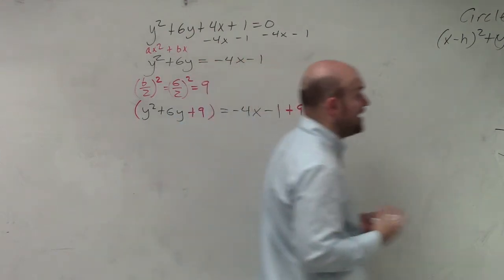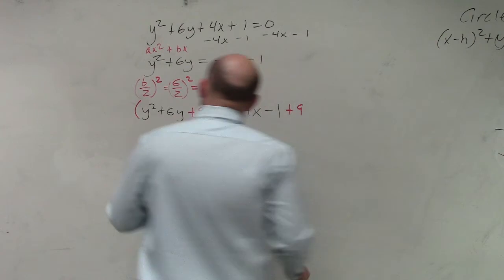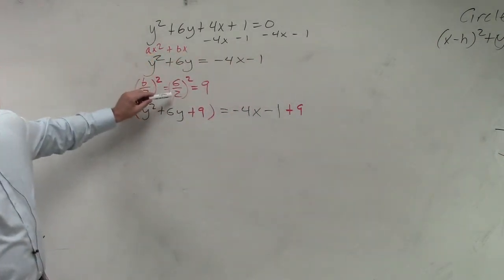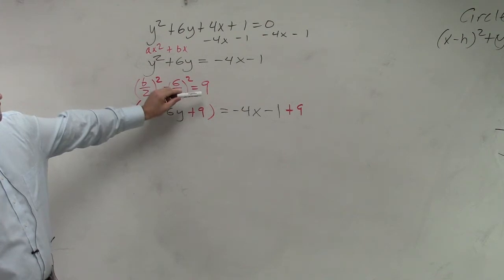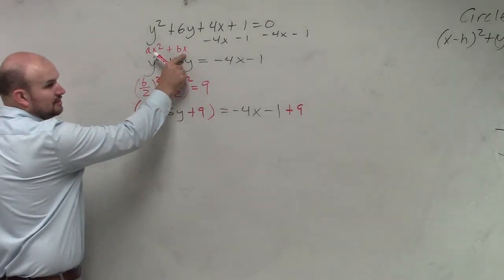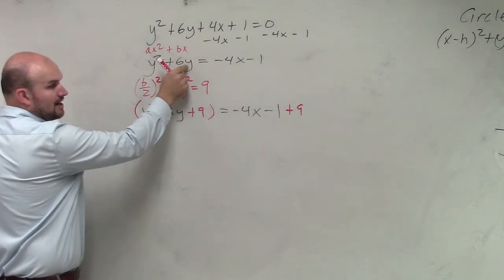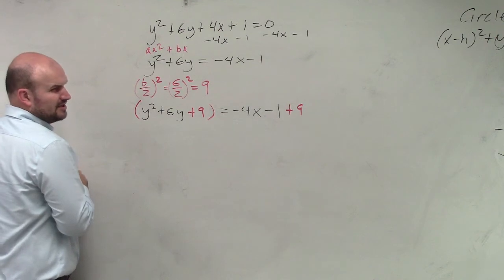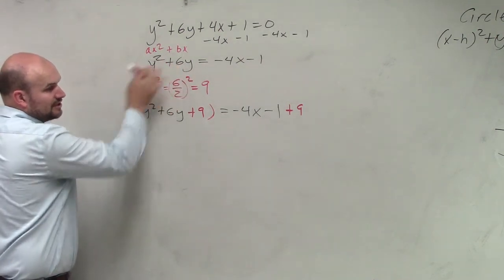Then, whatever you do on one side, you have to do on the other side. 6 divided by 2 is 3. 3 squared is 9. Why did you? b is your coefficient of your linear term. b is what's the coefficient of my linear term, which is y in that case. Does that make sense? x squared plus bx plus c. So b is your coefficient of your linear term.